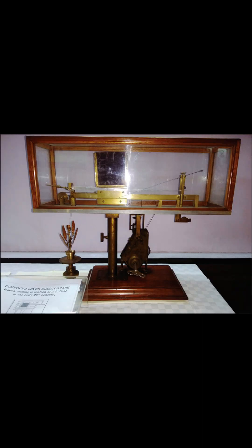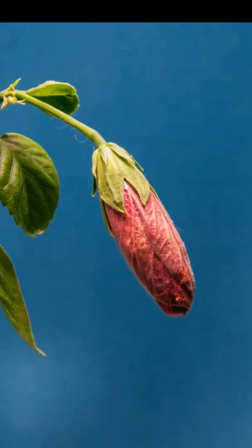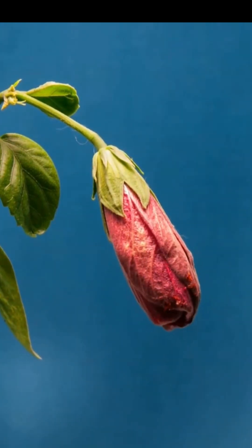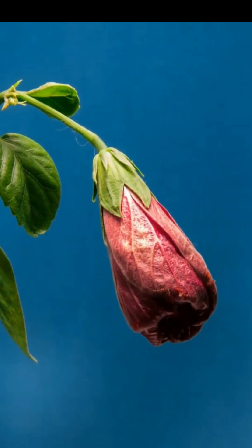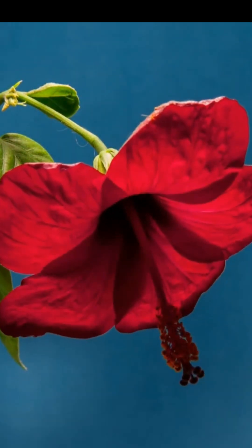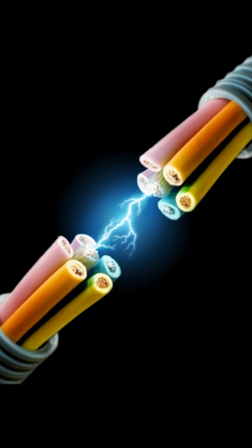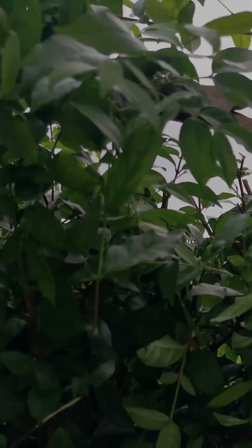Crescograph and Plant Movements: Bose invented an instrument called the crescograph, which allowed him to measure and record the growth and movement of plants. Bose demonstrated that plants have inherent motility and can exhibit rapid subtle movements in response to external factors such as light, temperature, electrical current, and mechanical stress.